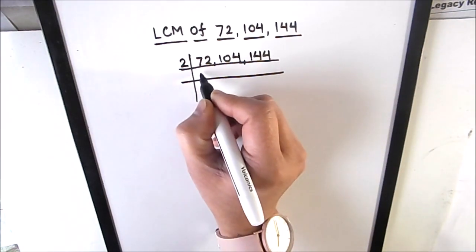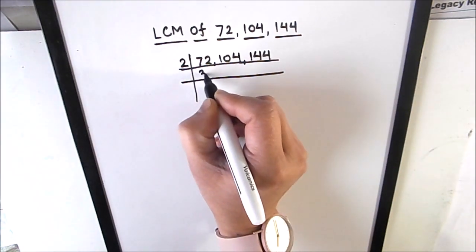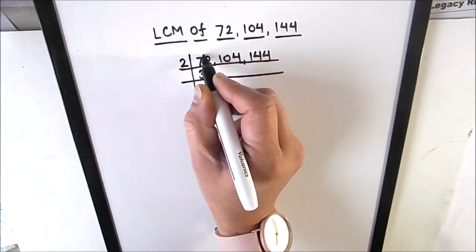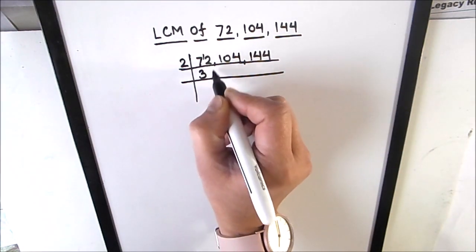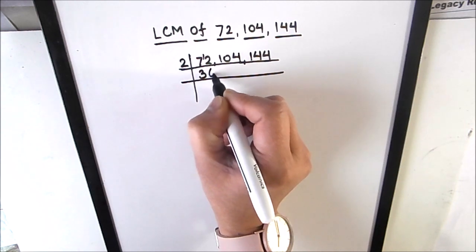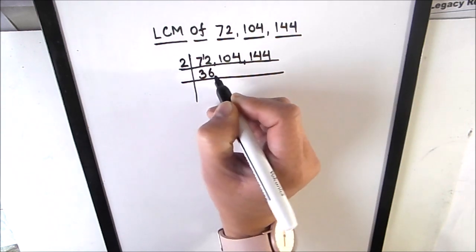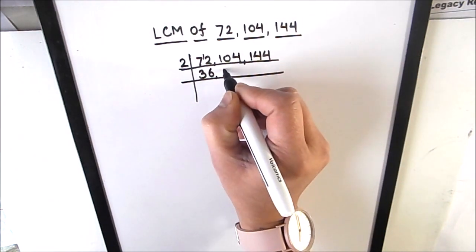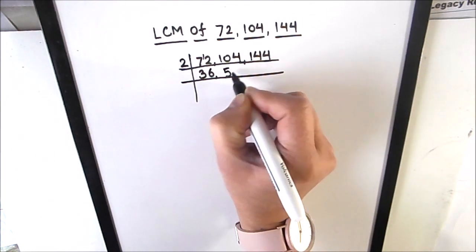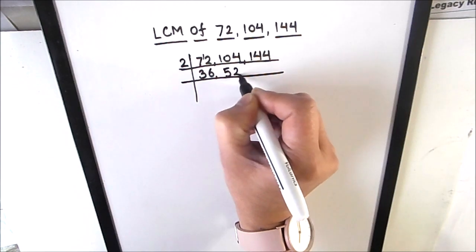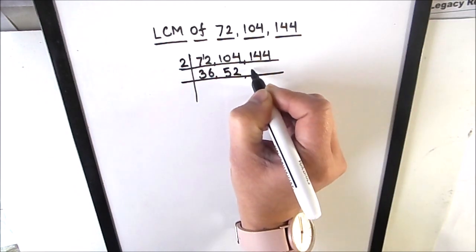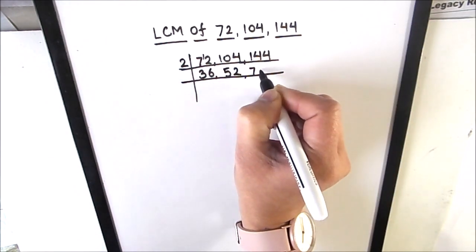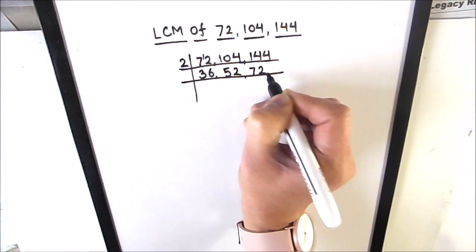2 times 3 is 6, 1 is remainder, this becomes 12 — 2 times 6 is 12. 2 times 5 is 10, 2 times 2 is 4, 2 times 7 is 14, 2 times 2 is 4.